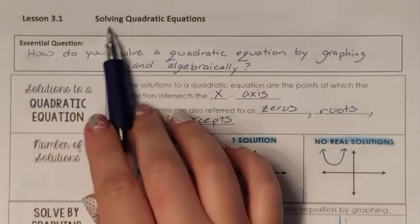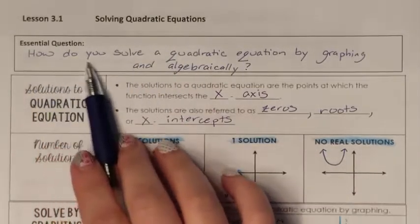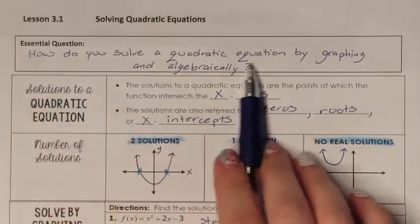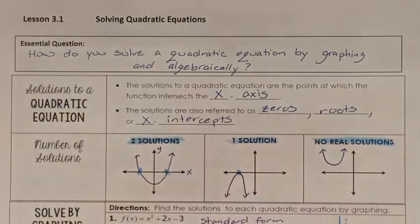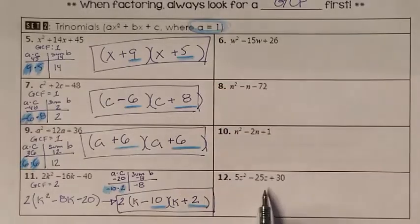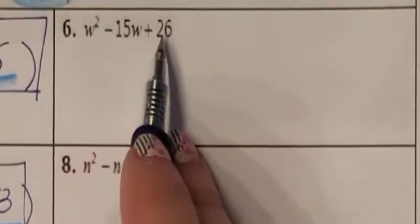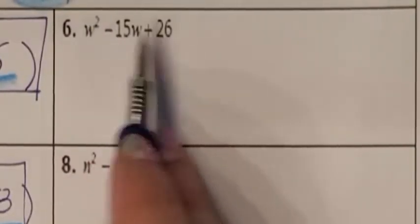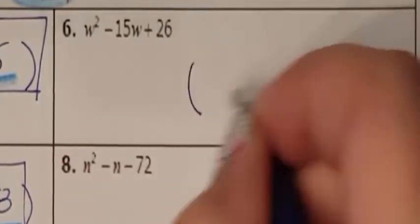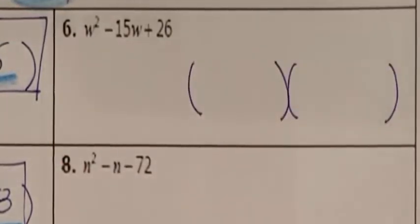Lesson 3.1: Solving Quadratic Equations — how do you solve a quadratic equation by graphing and algebraically? These are our four independent practice problems. I see that my GCF is a 1, and since my GCF is a 1 and my A is also a 1, I know that I can factor it straight into two parentheses.